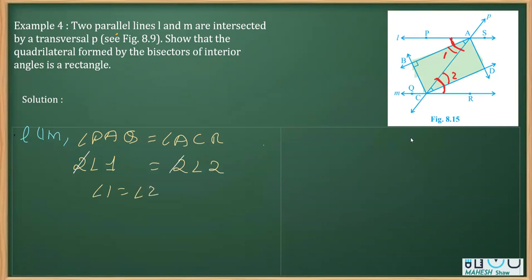These two angles — angle 1 and angle 2 — are alternate interior angles, but this time with respect to these two lines where AC is acting as a transversal, forming a Z-shape. Therefore we can say these two lines are parallel. Since their alternate interior angles are equal, we can write that AB is parallel to CD.